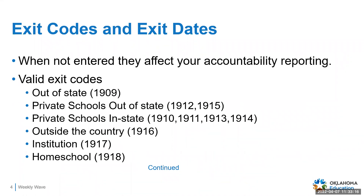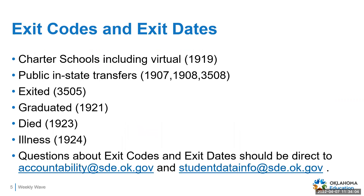Keep in mind when you don't enter exit codes correctly, it does affect your accountability reporting. Valid exit codes: if the student is leaving and going out of state, it's 1909. If they are going to private schools out of state, it's 1912 and 1915. If they're going to a private school in-state, it is 1910, 1911, 1913, and 1914. If they're leaving the country, it's 1916. If they've gone to an institution, it's 1917. Homeschooling is 1918. Charter schools including virtual is 1919. In-state public transfers — if they're going to another public school in-state — it's 1907, 1908, and 3508.